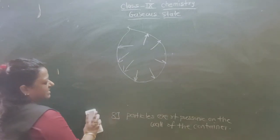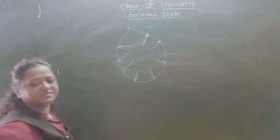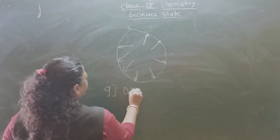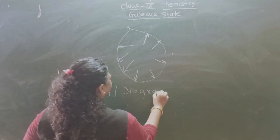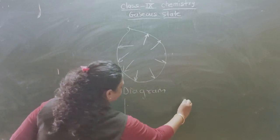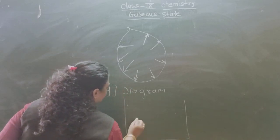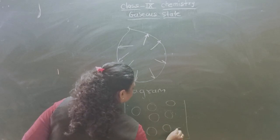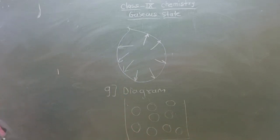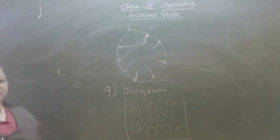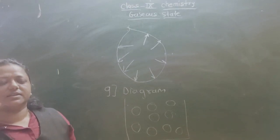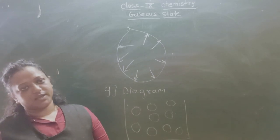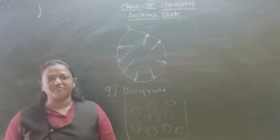Now the ninth property is the diagram of the gaseous state. We draw a container and in it the particles are arranged randomly and spread out — this is the diagram of the gaseous state. In this manner, in today's lecture I have completed the gaseous state. The further topics we will see very soon. Thank you so much.